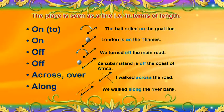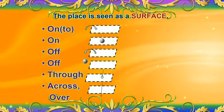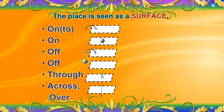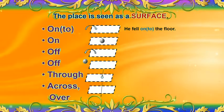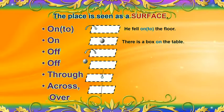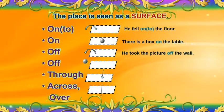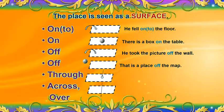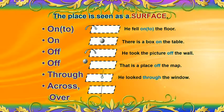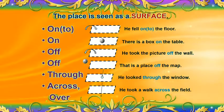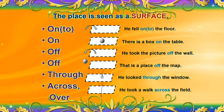Now let us see the use of prepositions when the place is seen as a surface. 'On to': he fell onto the floor. 'On': there is a box on the table. 'Off': he took the picture off the wall — that is, a place off the map. He looked through the window. He took a walk across the field. Here, the place is seen as a surface.